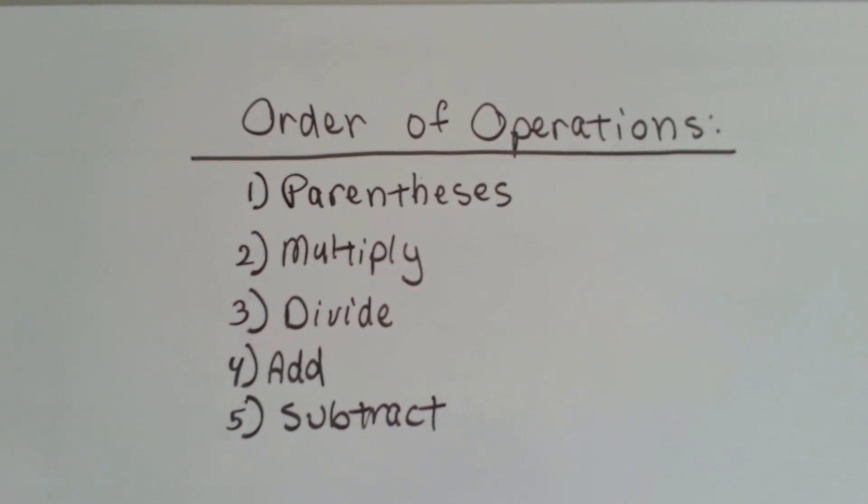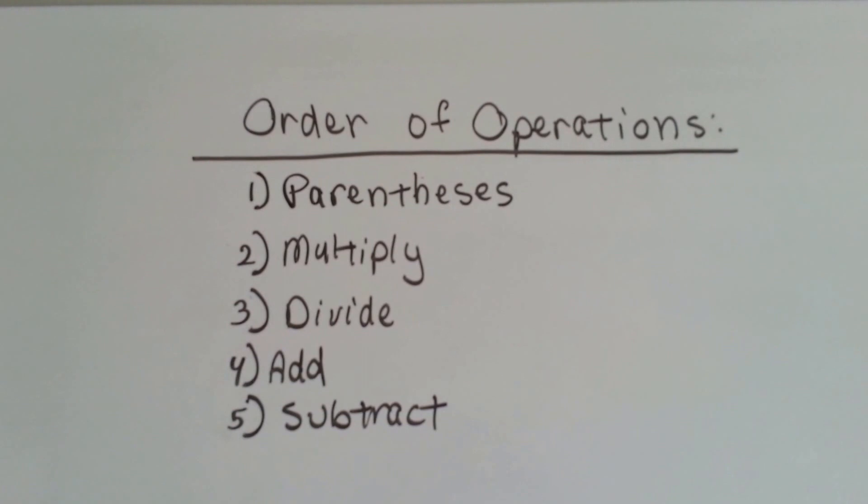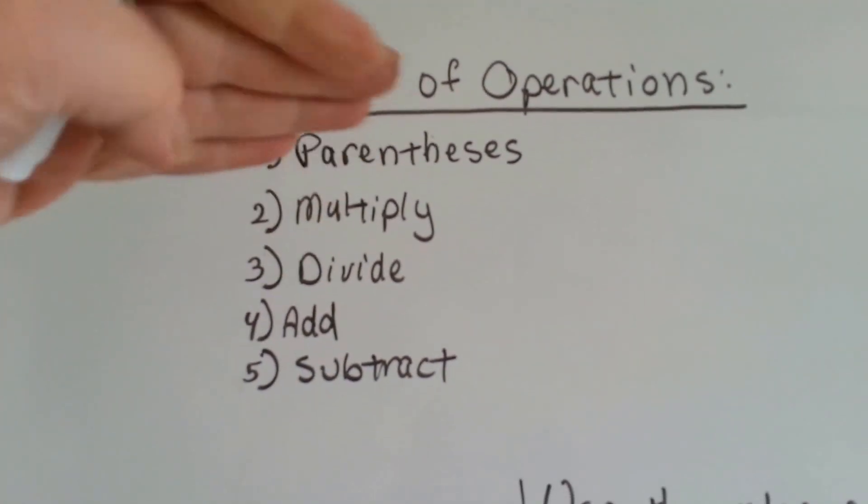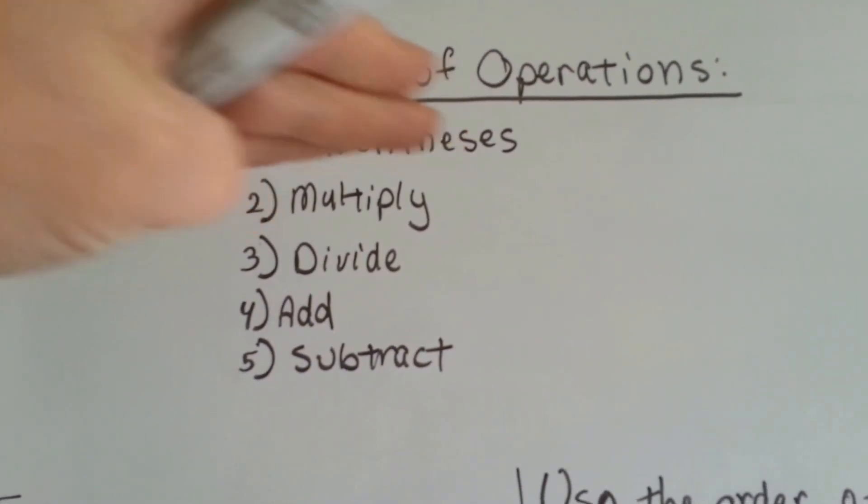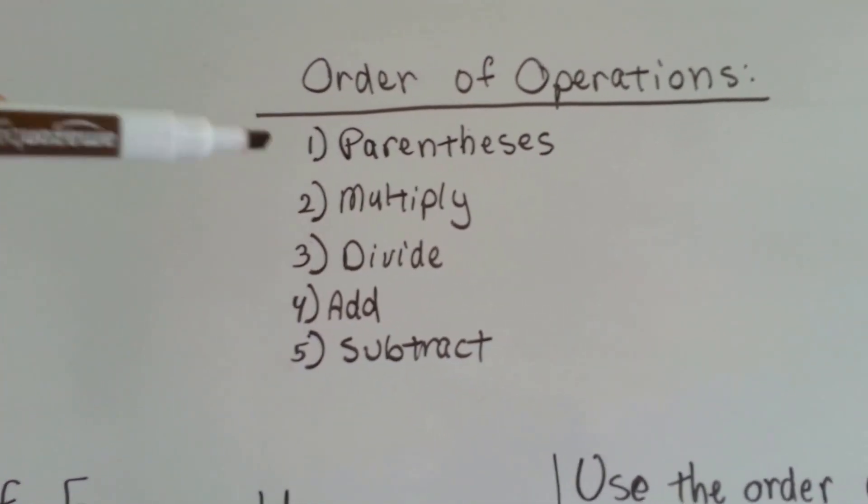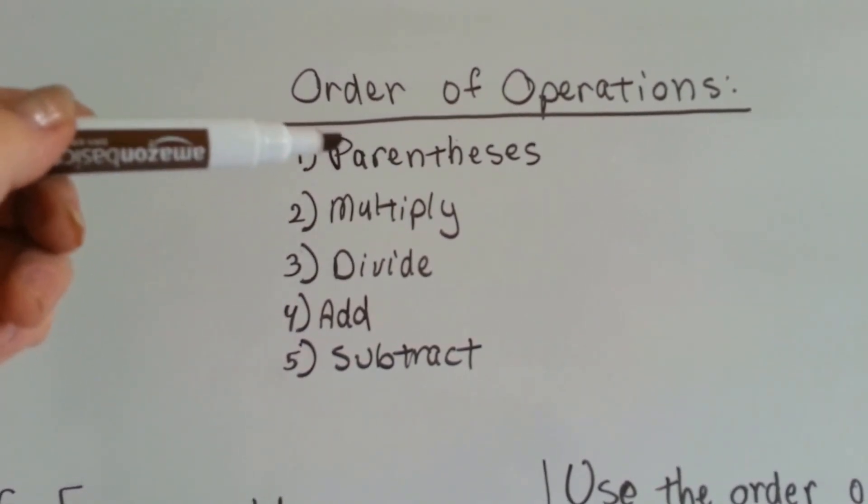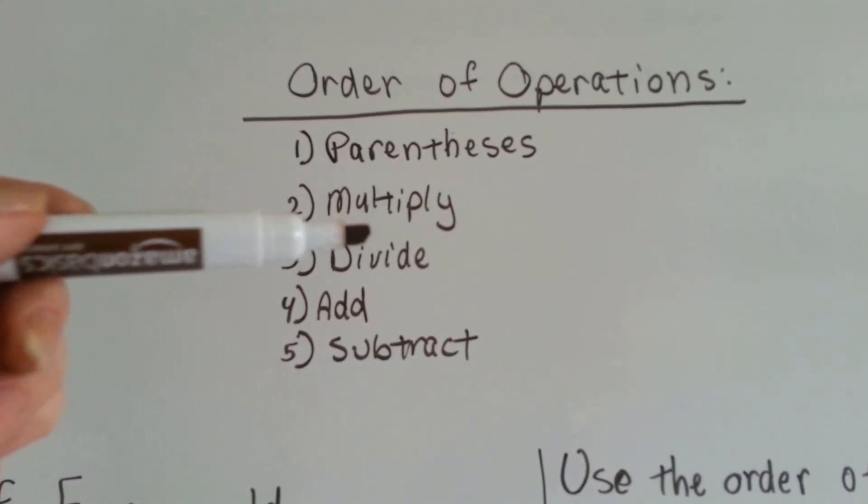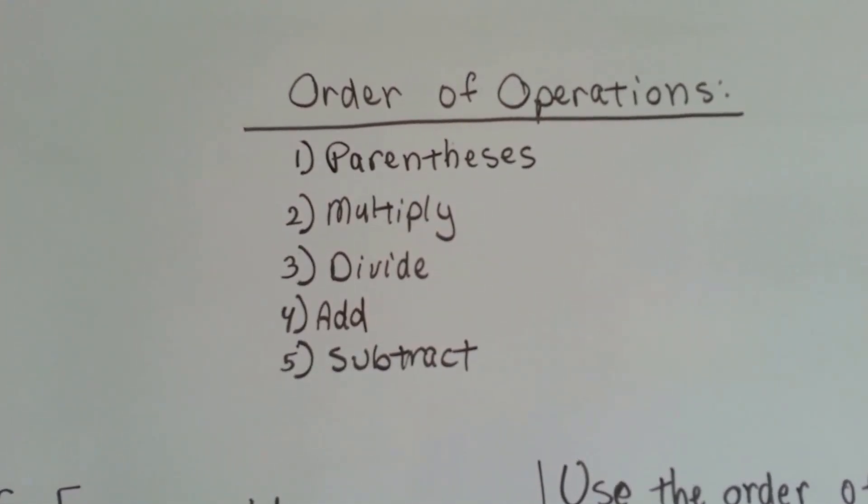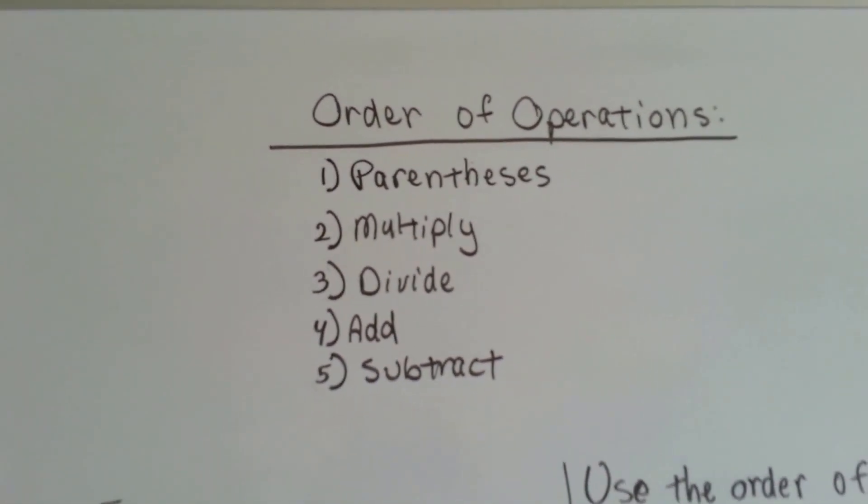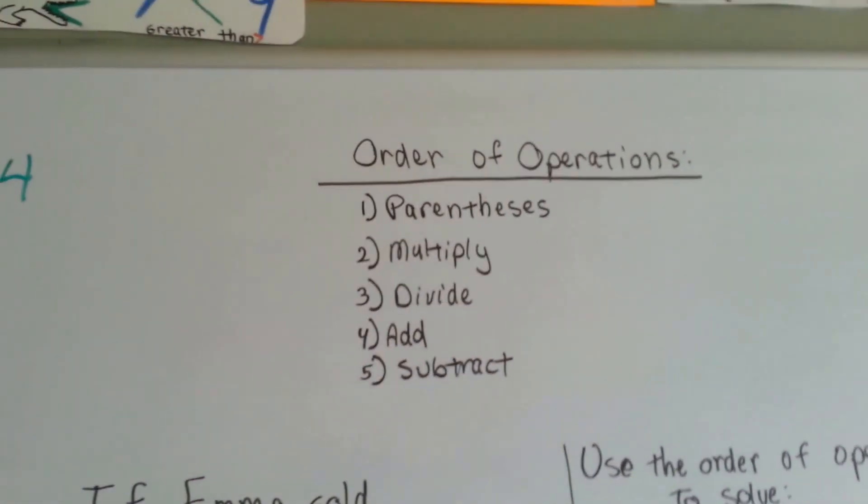So stick with me. But you need to figure out a way to remember PEMDAS: parentheses, multiply, divide, add, subtract. Now in third grade, we just had multiply, divide, add, subtract. But now that you're in fourth grade and you're a little bigger, we're adding parentheses to the top. So whatever is in parentheses is what you're going to do first in the math problem. Then you're going to multiply, then divide, then add, and then subtract. PEMDAS, that's the order of operations.